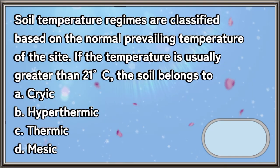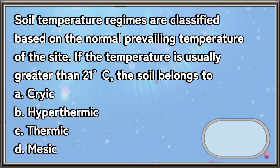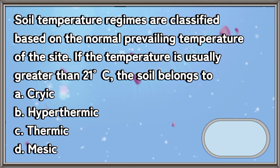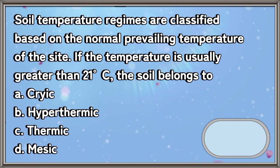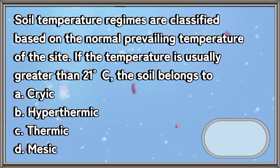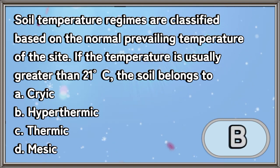Soil temperature regimes are classified based on the normal prevailing temperature of the site. If the temperature is usually greater than 21 degrees Celsius, the soil belongs to: A. Cryoc, B. Hyperthermic, C. Thermic, D. Mesic. The answer is letter B.